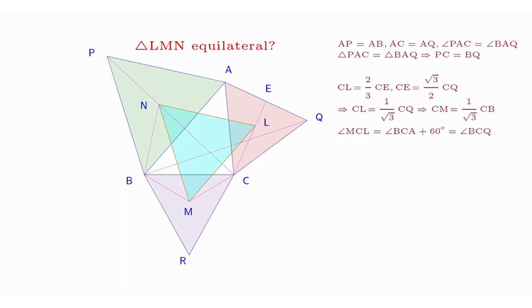Therefore, angle MCL equals angle BCQ. Hence, we can conclude that triangles MCL and BCQ are similar. Consequently, ML equals BQ divided by √3.